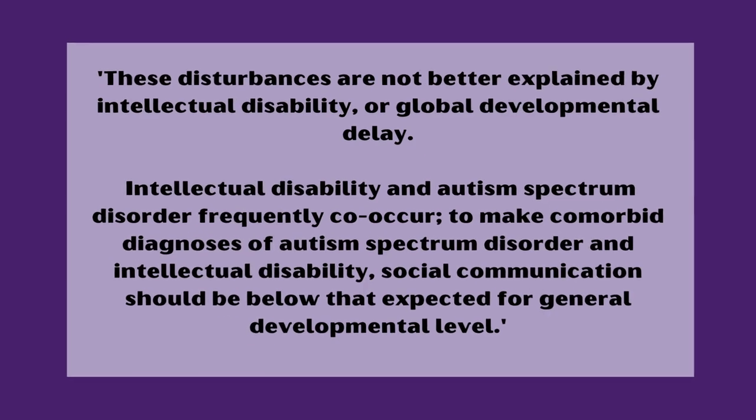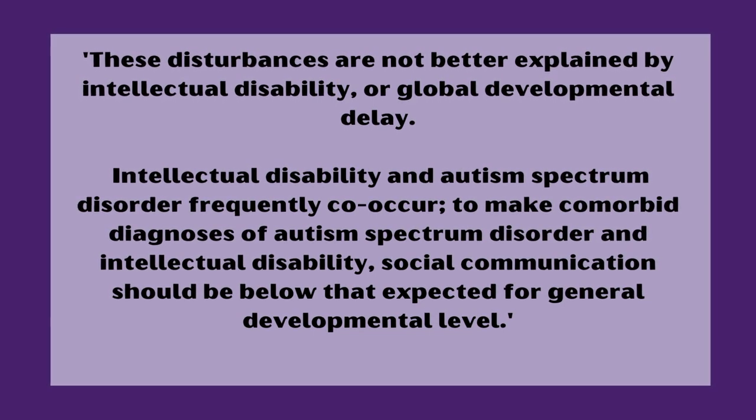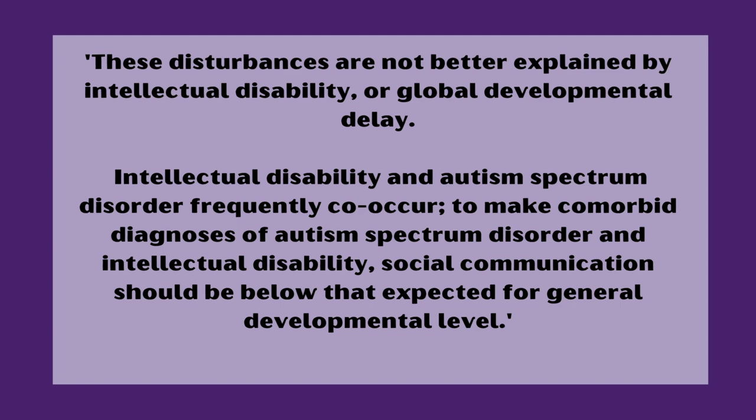Finally, Criteria E: these disturbances are not better explained by intellectual disability or global developmental delay. Intellectual disability and autism spectrum disorder frequently co-occur, making comorbid diagnoses of ASD and intellectual disability possible. Social communication should be below that expected for general developmental level. So that's the complete diagnostic criteria in the DSM-5 for autism — hopefully helpful if you're considering getting an assessment with a view to receiving an official diagnosis. I'm also going to include some online autism tests in the description box, which you can take to give you an indication of whether autism might be a possibility, and you could print them off and take them with you to an assessment.